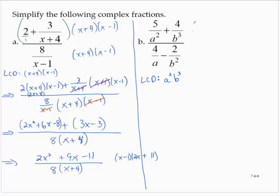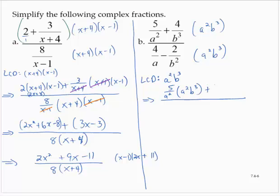Multiplying the numerator and denominator by a²b³ gives us: 5 over a² times a²b³, plus 4 over b³ times a²b³, all over 4 over a times a²b³, minus 2 over b² times a²b³.